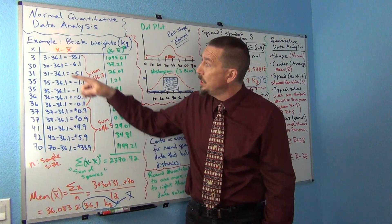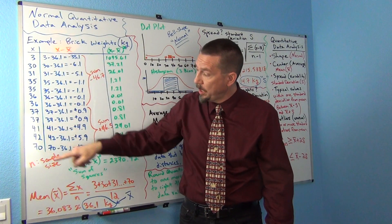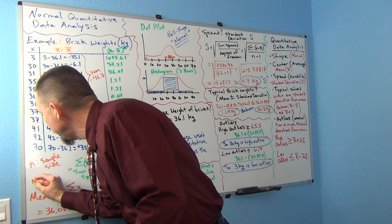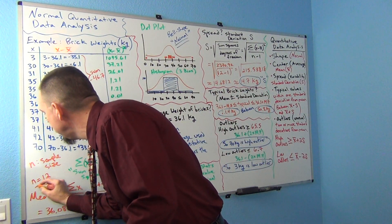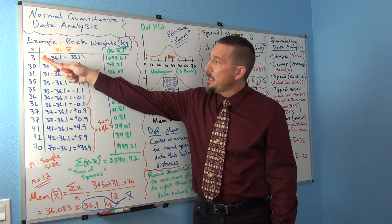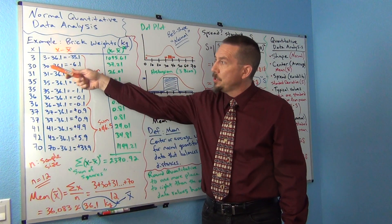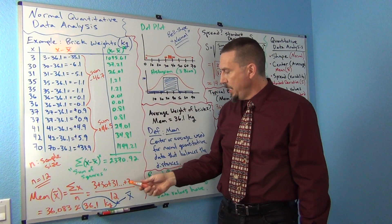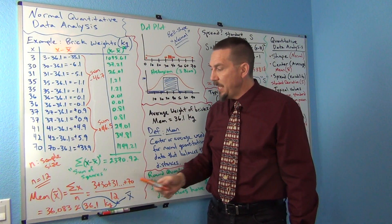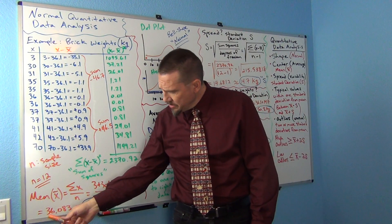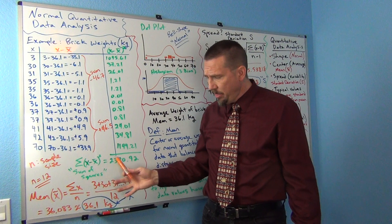Now N is called sample size or how many numbers are in your data. So in our case, our N was 12. If you count, there was 12 numbers in the data set. Now all I'm going to do is I'm going to add up the numbers. So 3 plus 30 plus 31 plus 35 plus 36 and so on all the way to 70 and then divide by 12. And it looks like we get this 36.083.